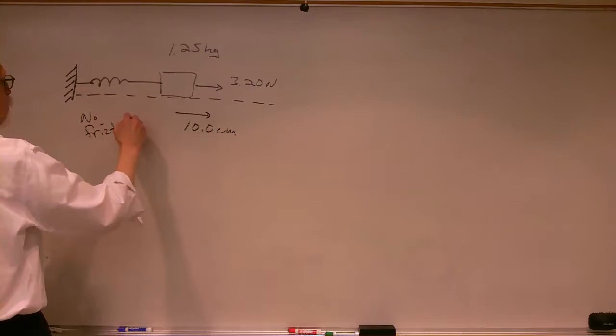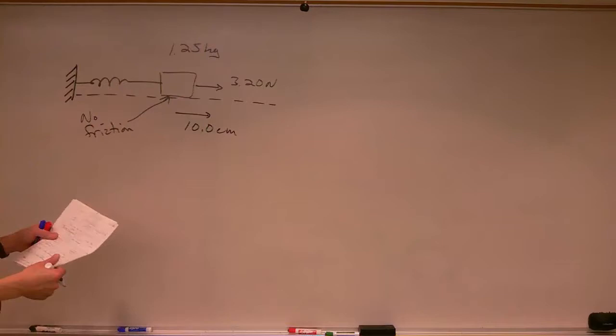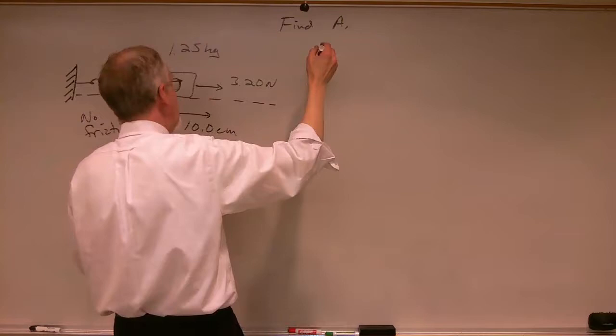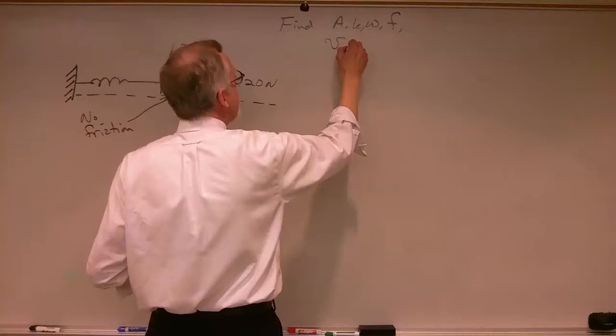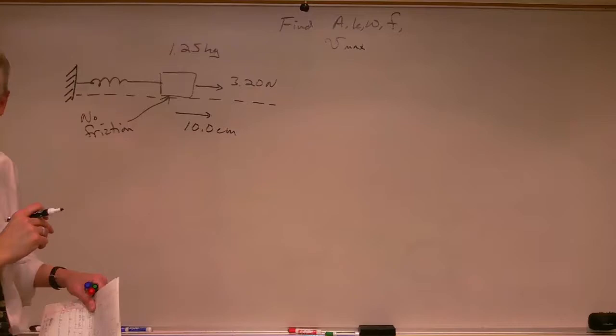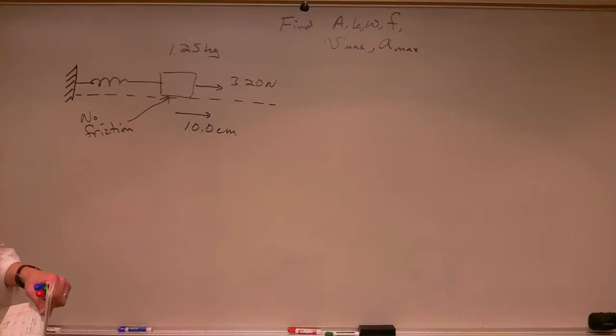It's going to oscillate back and forth. Let's assume there is no friction between the block and the floor, so we're not losing any energy — we've basically got a simple harmonic oscillator. Let's find the amplitude A, the spring constant k, omega, and frequency f. And let's also figure out the maximum speed the object will have and the maximum acceleration during one oscillation.